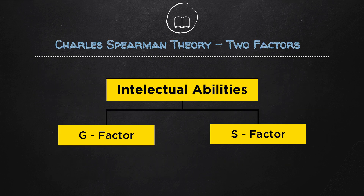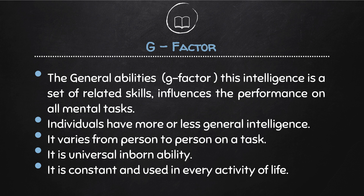Charles Spearman developed his two-factor theory of intelligence using factor analysis. His research not only led him to develop the concept of the g-factor of general intelligence, but also the s-factor of specific intellectual abilities. This general intelligence is a set of related skills that influences performance on all mental tasks. Individuals have more or less general intelligence, which varies from person to person. It is a universal inborn ability — constant and used in every activity of life.